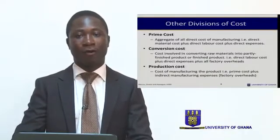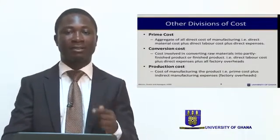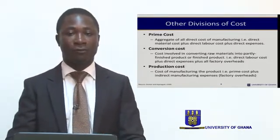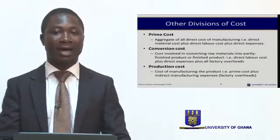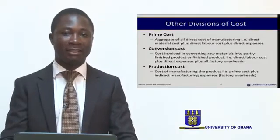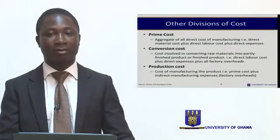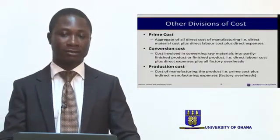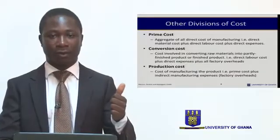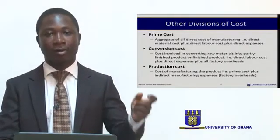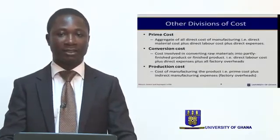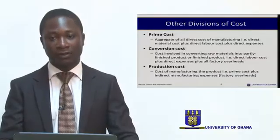All the cost which is involved in converting the raw material into a partly finished product or finished product is referred to as the conversion cost of the organization. The production cost is the cost of manufacturing the product, and it would involve the prime cost plus all the indirect manufacturing expenses, known as factory overheads.